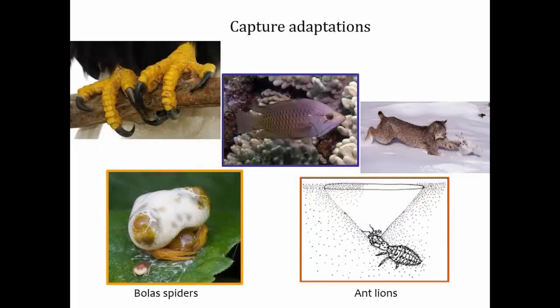The next step is that predators have to successfully capture their prey. Sharp talons, sharp teeth, and big claws are classic capture adaptations. There are also many other interesting ones — check out the videos for the sling-jawed wrasse, a fish that can extend its jaw, and bolas spiders, which capture prey by spinning a sticky silk on the end of a long strand and throwing it at the prey.